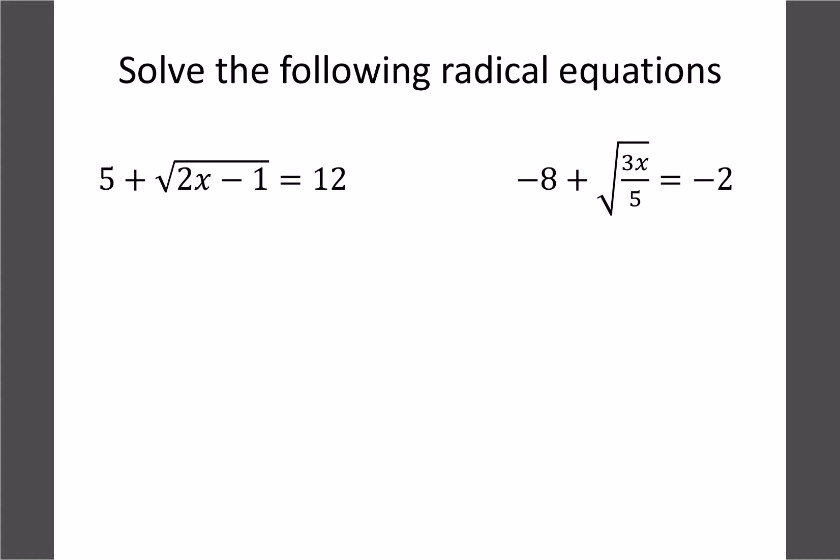So let's try a couple more. Here's one, get the square root by itself first, let's get rid of the 5. So we'll subtract 5, so we'd have root 2x minus 1 equals 7. Now we can square both sides, so 2x minus 1 is 49. Now we just solve it like a normal equation, add 1 to both sides, we'd have 2x equals 50, and divide by 2, x equals 25 would be our final answer. And if we plug that back into the original, we can double-check,